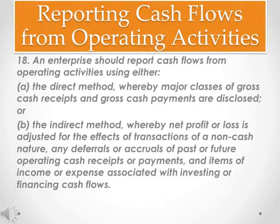Reporting cash flows from operating activities. An enterprise should report cash flows from operating activities using either: A. The direct method, whereby major classes of gross cash receipts and gross cash payments are disclosed; or B. The indirect method, whereby net profit or loss is adjusted for the effects of transactions of a non-cash nature, any deferrals or accruals of past or future operating cash receipts or payments, and items of income or expense associated with investing or financing cash flows.